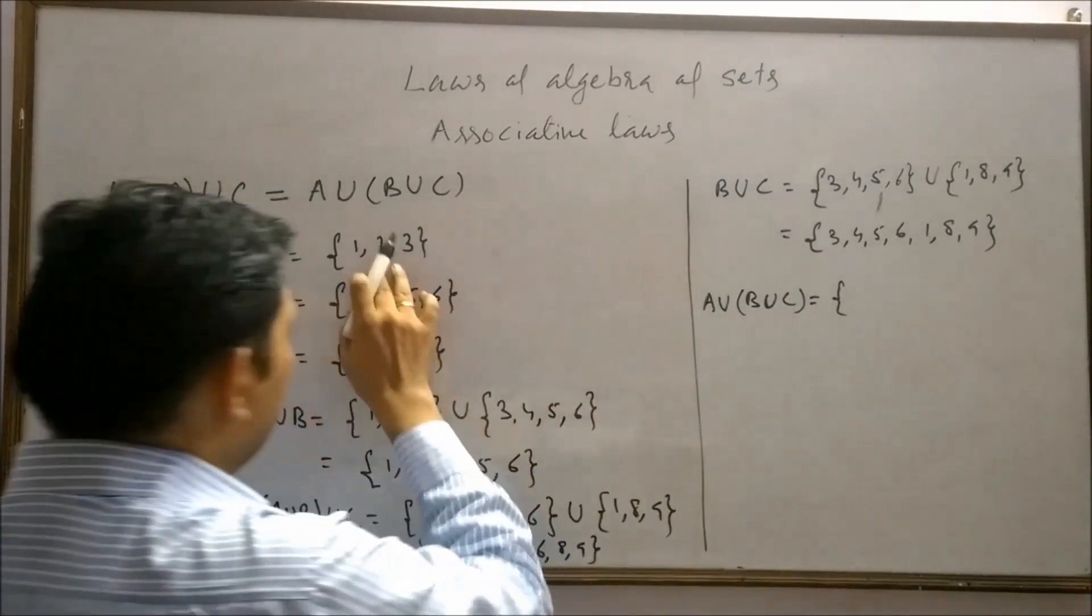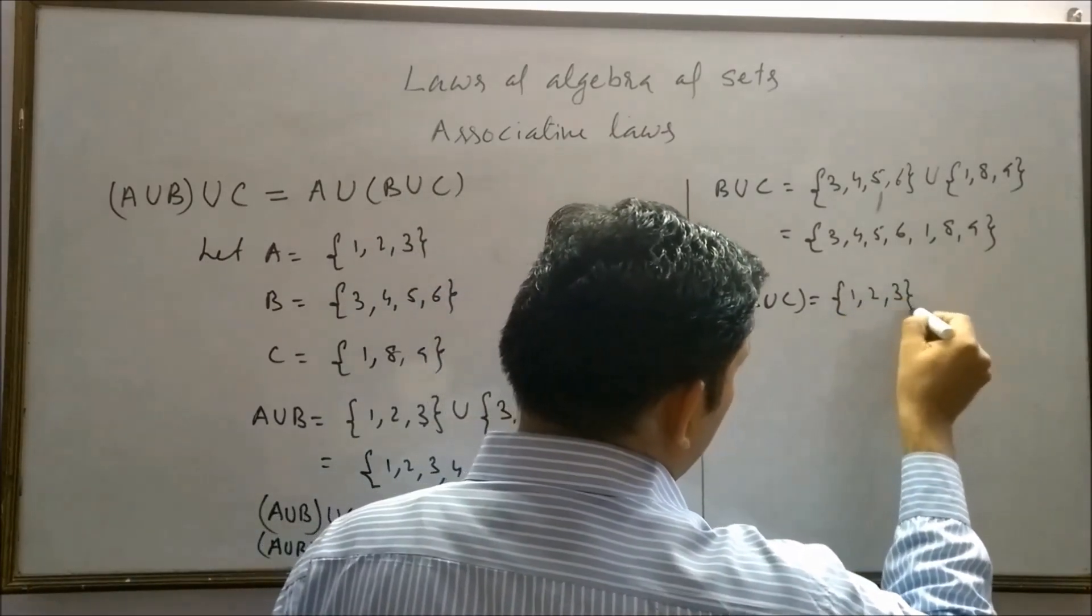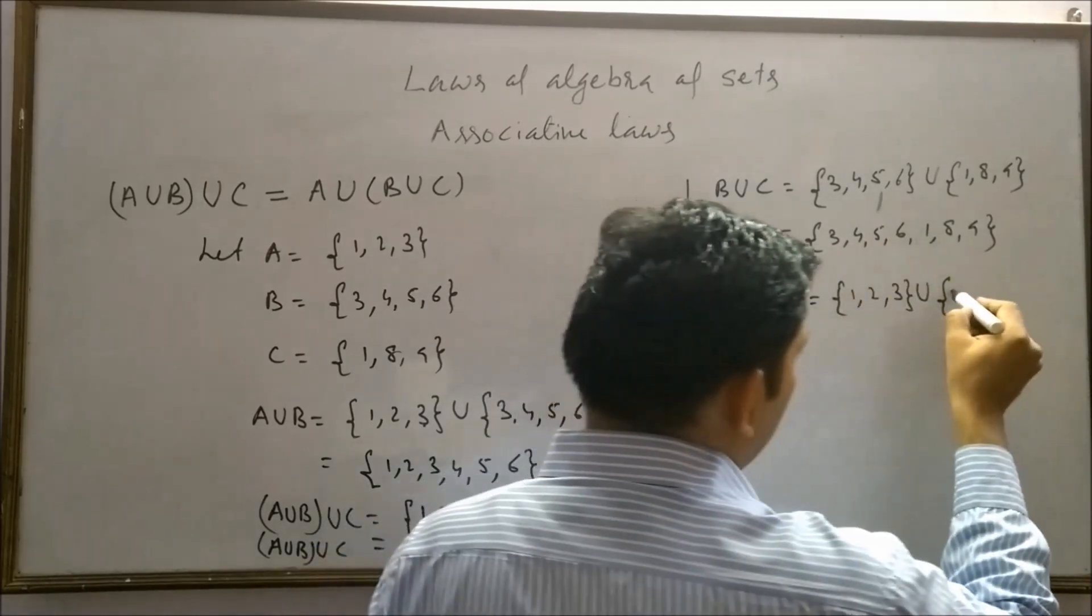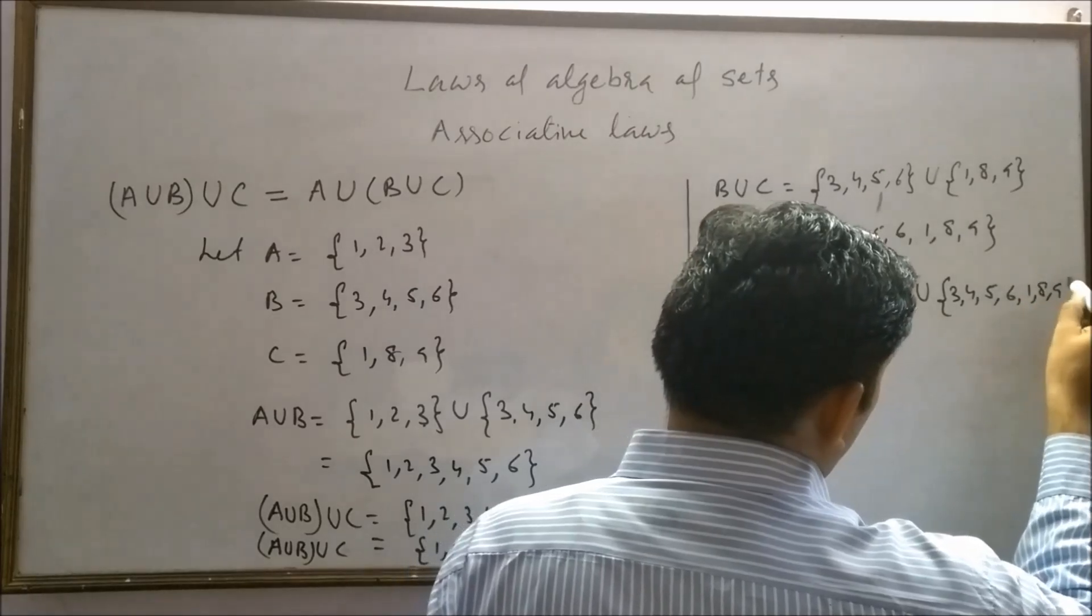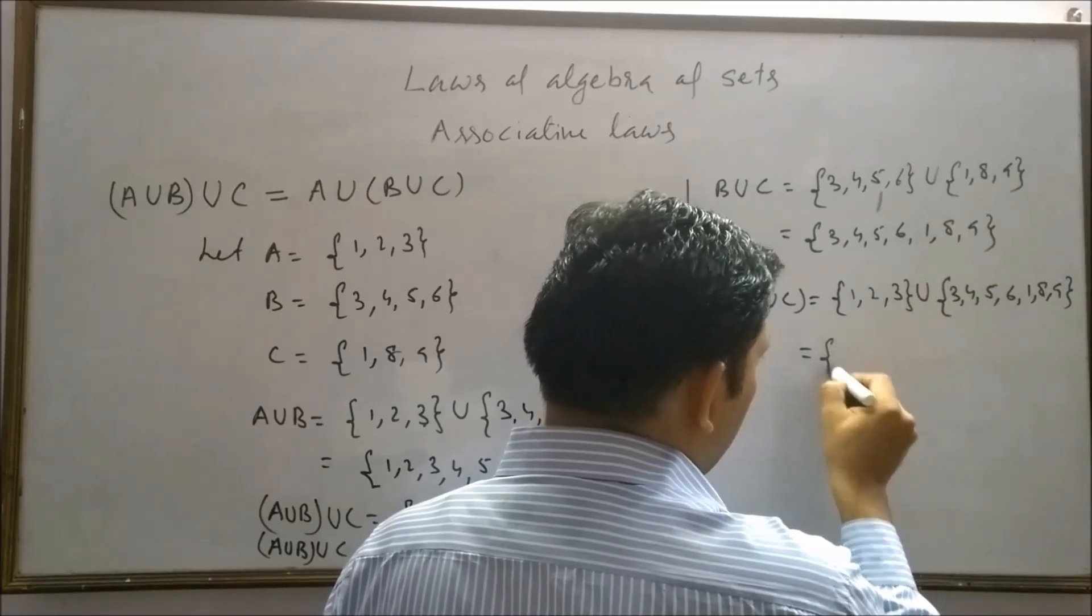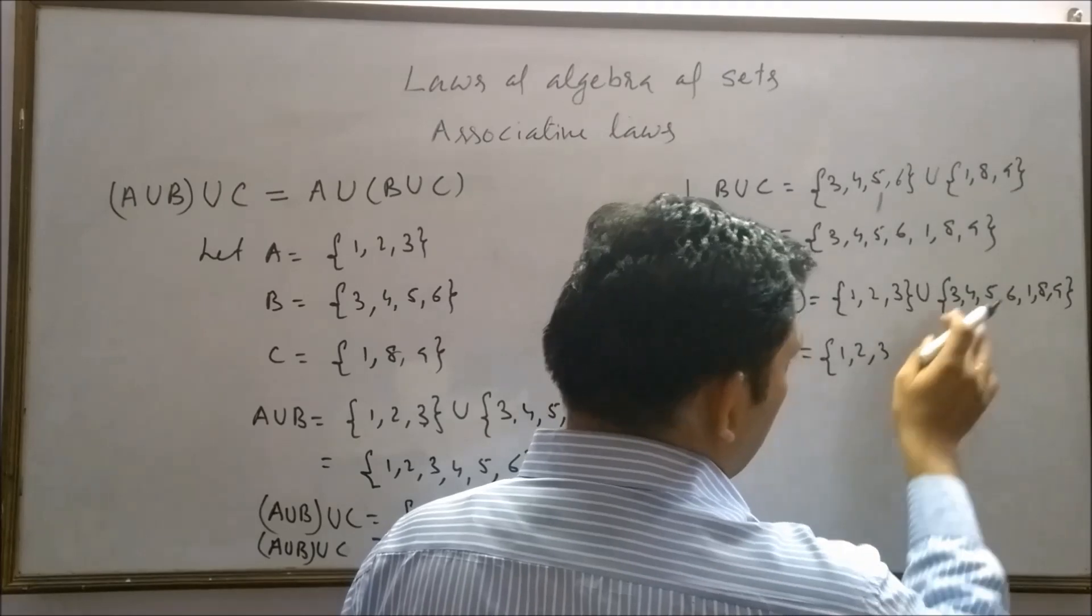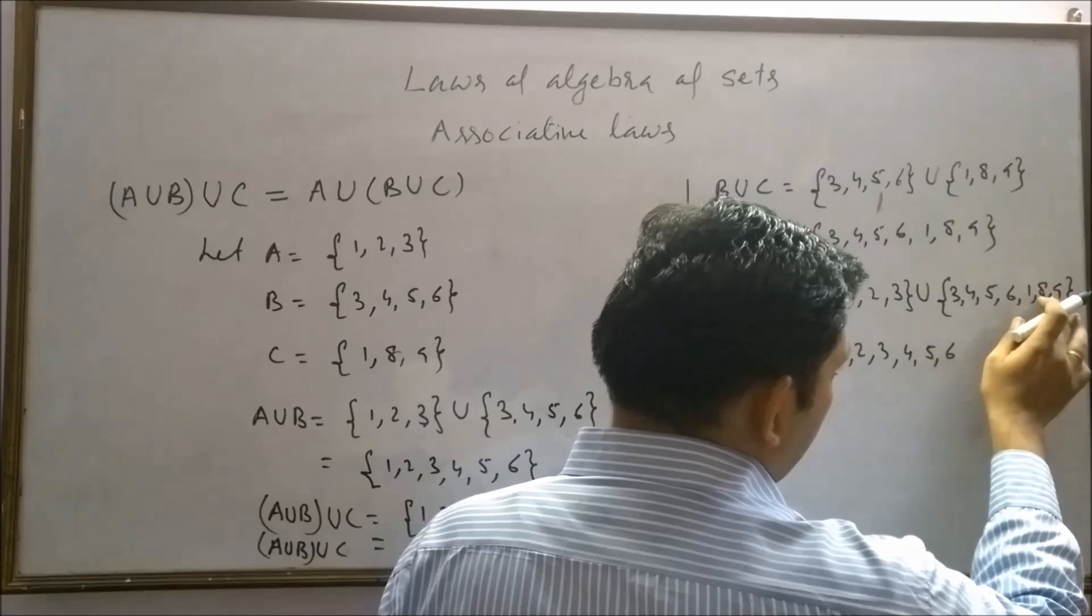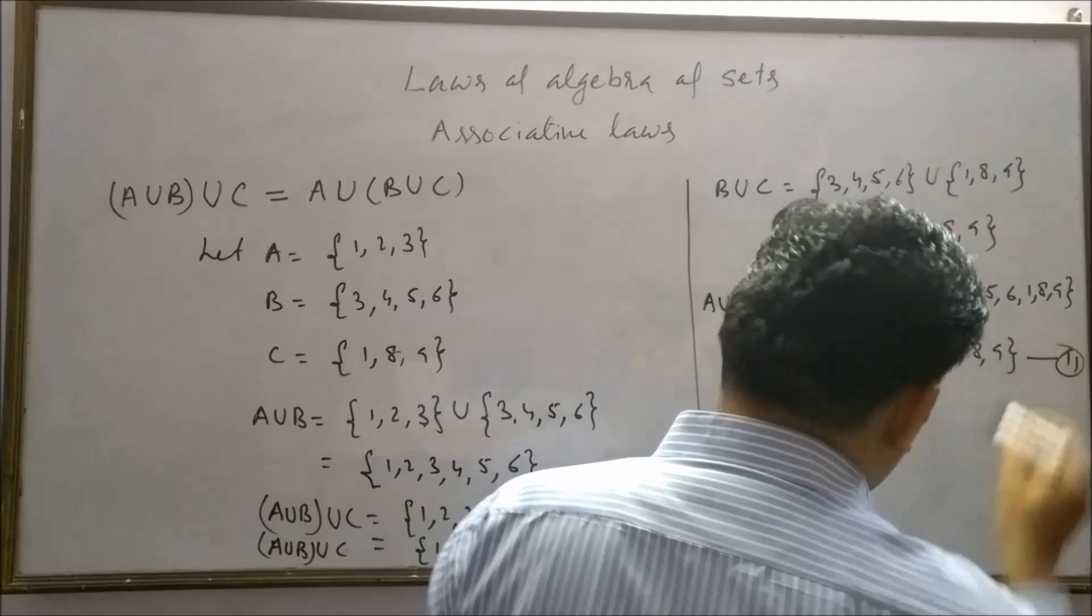Now A union B union C. A, set A is first natural number 1, 2, 3, union 3, 4, 5, 6, 1, 8, and 9. If we combine these sets, we will get 1, 2, 3, 4, 5, 6, 8, 9. This is our second result.